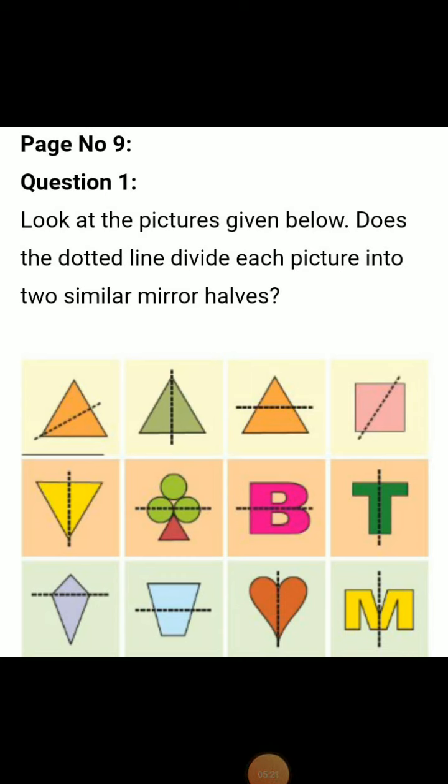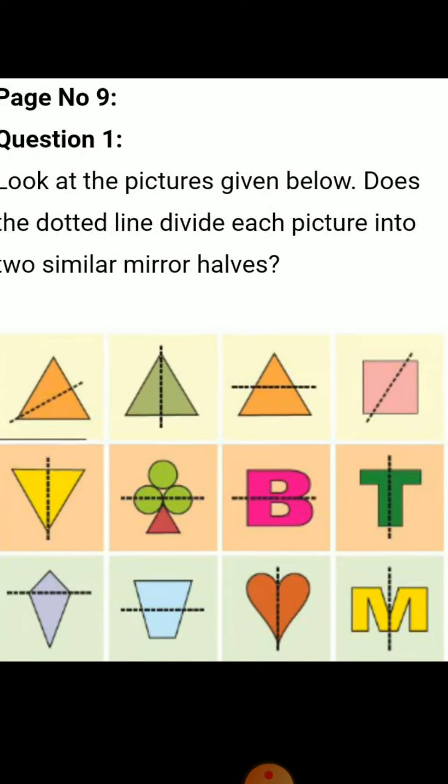Now come to page number 9. See what question is given here. Look at the pictures given below. Does the dotted line divide each picture into two similar mirror halves? This question is asking that few shapes are given with a dotted line, and you all know that these dotted lines are the line of symmetry. We have three types of line of symmetry: horizontal line of symmetry, vertical line of symmetry, and diagonal line of symmetry. In this question, the shapes as well as the line of symmetry are already given. You have to check whether these lines of symmetry are dividing the given pictures into similar mirror halves or not.